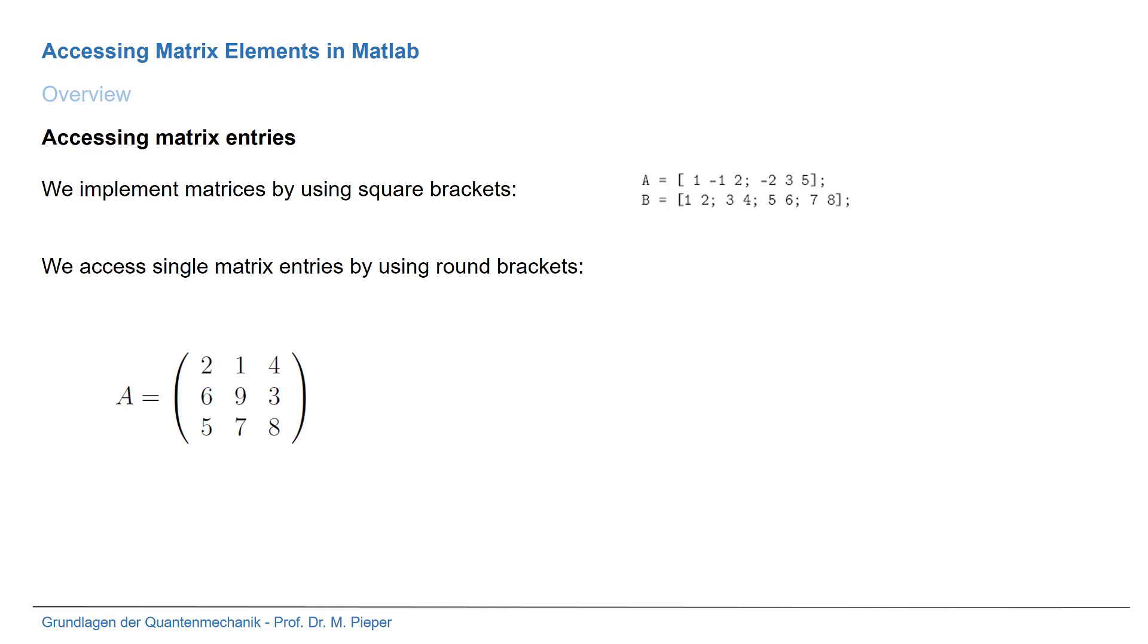Here is an example. We consider this 3x3 matrix and we are interested in this matrix entry, the 6. So how do we do this? We write A and then we use the round brackets and we have two indices.